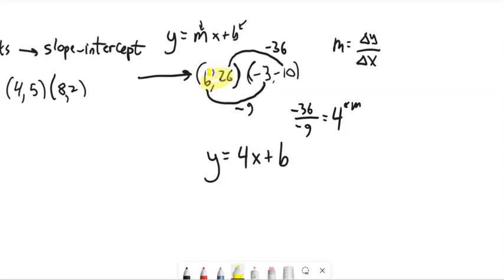So I could grab this point. And if you notice, on that point, x is 6 when y is 26. So I'm just going to substitute those in. So 26 will go into the y spot. 6 will go into the x spot. Plus some b.